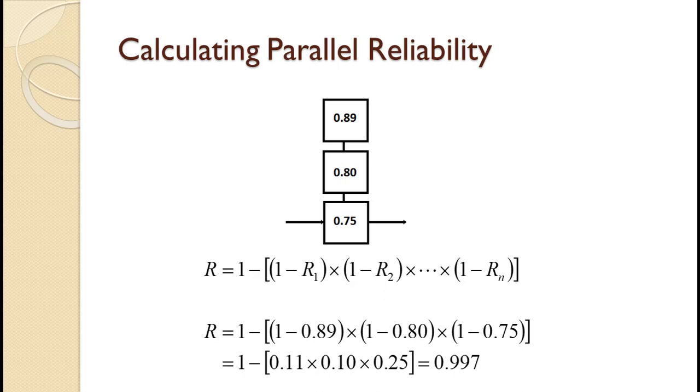overall reliability is 1 minus the quantity of the products of 1 minus the reliability of each component. That works out to 1 minus the quantity 1 minus 0.89 times 1 minus 0.80 times 1 minus 0.75. Those calculations work out to 0.997.